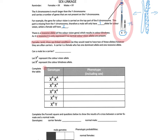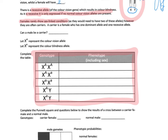We're going to skip down to the table for you to fill in. If we let capital A on the X represent the normal colour vision allele, and small a represent the colour blindness allele, we can work out the phenotype for each genotype. For example, a female with two capital A's on her X chromosomes is a normal female. Take a minute to fill in the phenotype — including the sex — for each combination shown.